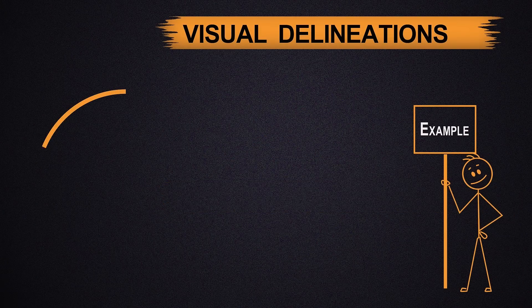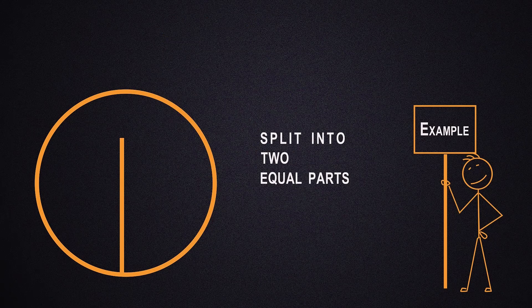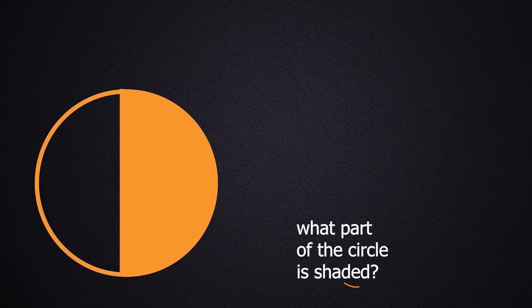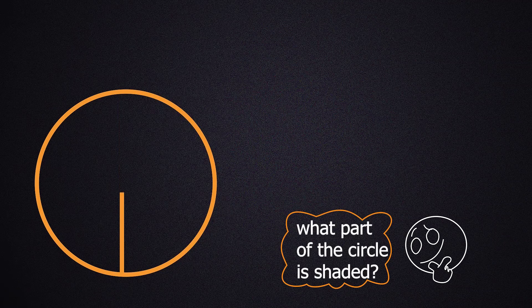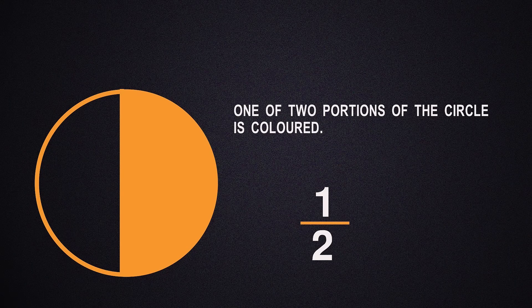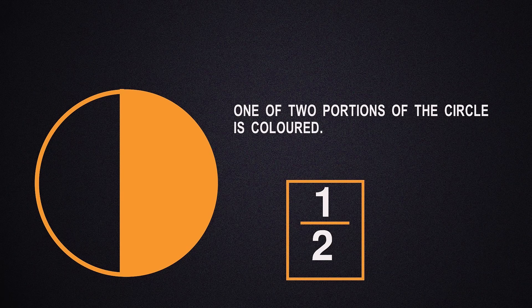Suppose we have a circle. How about we split the circle into two equal parts. So what part of the circle is colored? There are two pieces of the circle and only one of those two sections is colored. So we could say that one of two portions of the circle is colored.